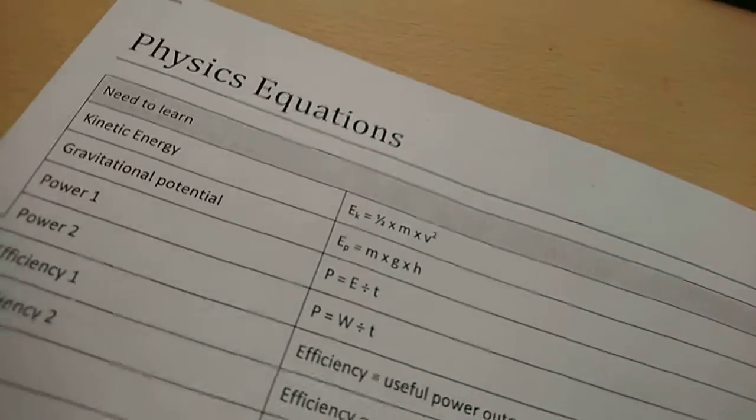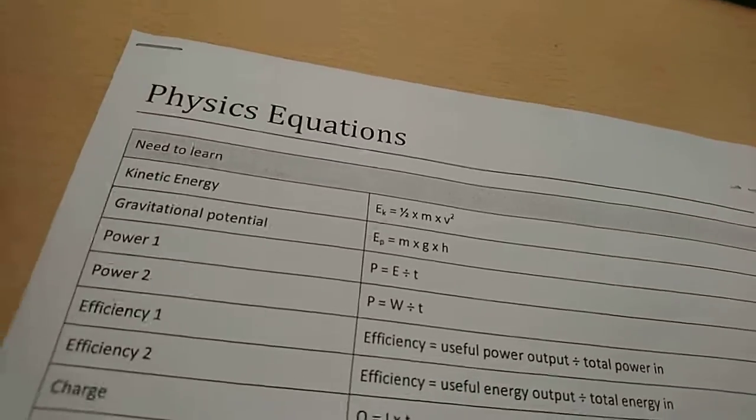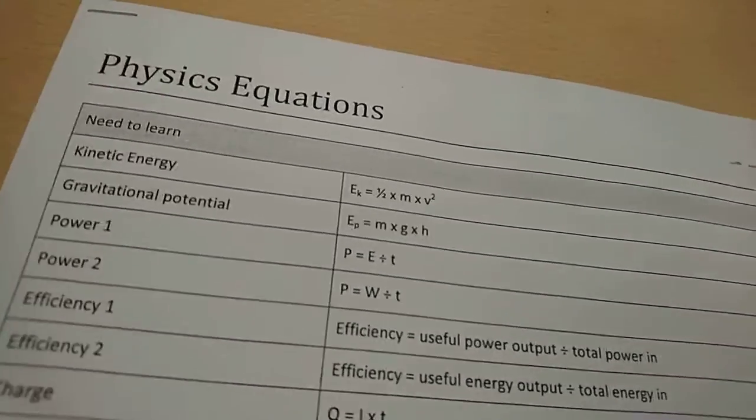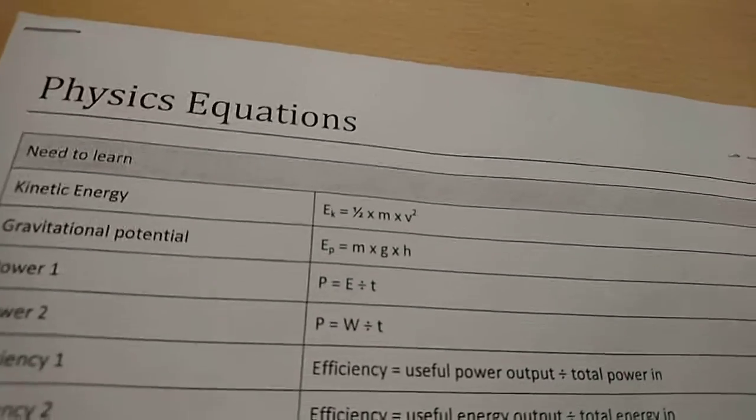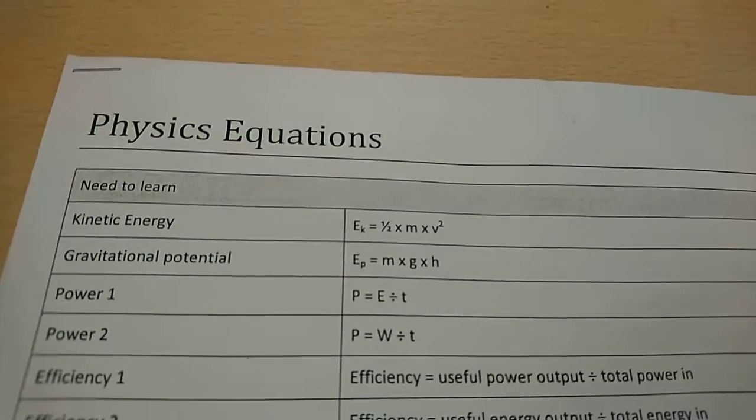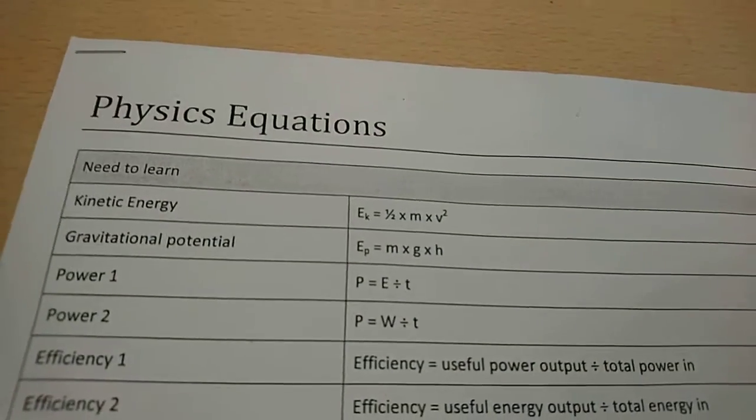And then next we've got a similar equation, gravitational potential. Ep, gravitational potential, equals mass times gravity times height, which makes a lot of sense as more mass, more force, higher height, more distance for the force to act over.